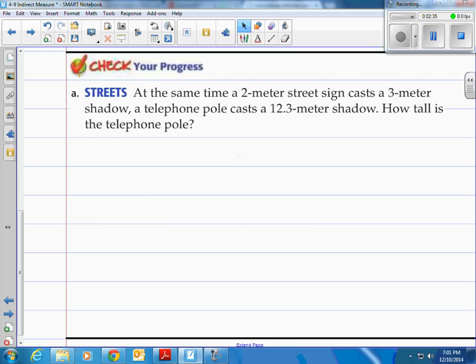All right here it is. At the same time a 2 meter street sign casts a 3 meter shadow. A telephone pole casts a 12.3 meter shadow. How tall is the telephone pole?